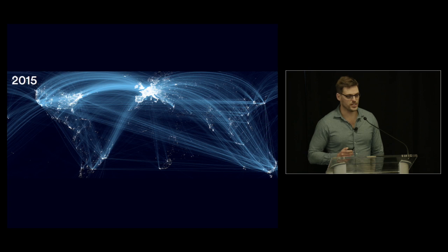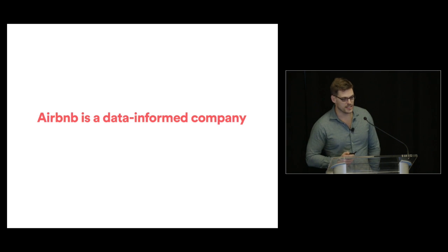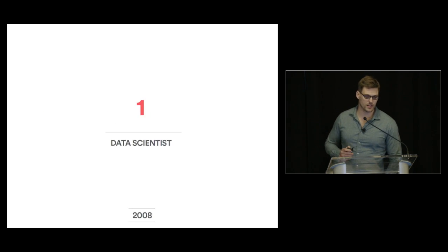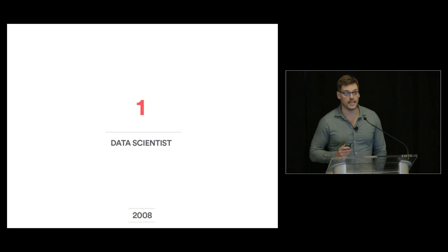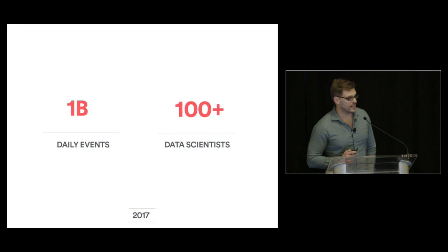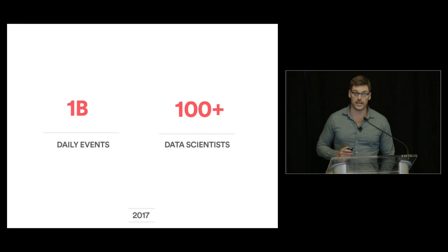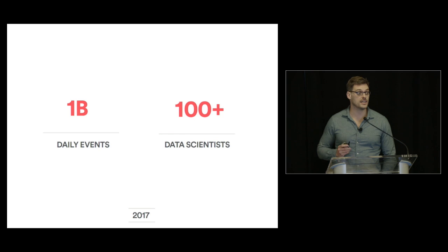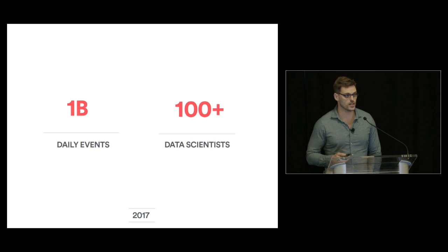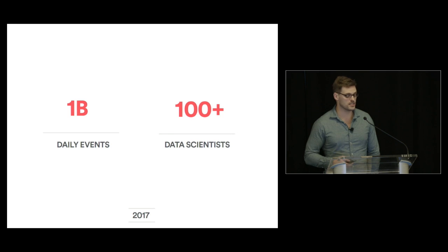I think a big reason for this fast growth is that Airbnb is a data-informed company. In 2008, we had a data scientist among our very first five hires. And today, we collect over 1 billion daily events and we have a team of over 100 data scientists — not including data engineering, data infrastructure, machine learning engineers, and financial planning and analysis.